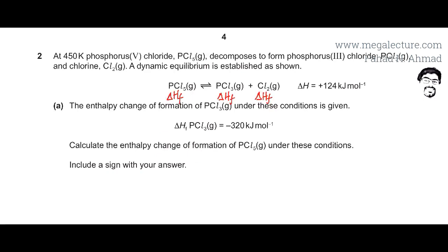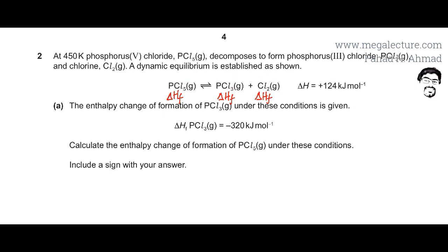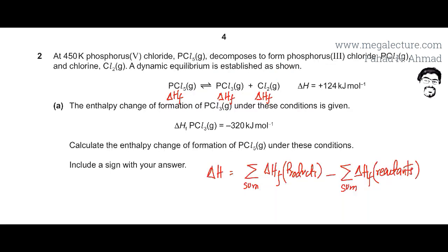One method of calculating the enthalpy of this reaction is using Hess's law. If you are given the enthalpy of formation of the products as well as the enthalpy of formation of the reactants, you can use the formula: the enthalpy of the reaction equals the sum of the enthalpy of formation of products minus the enthalpy of formation of the reactants. This is precisely what I am going to do.